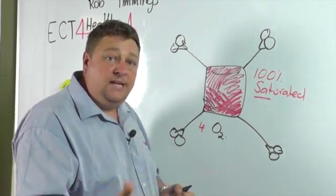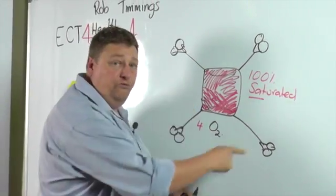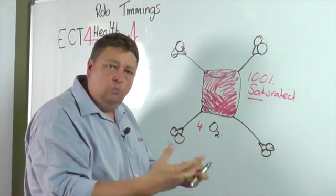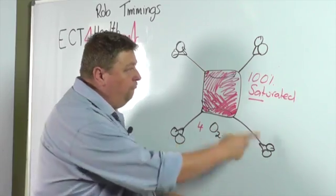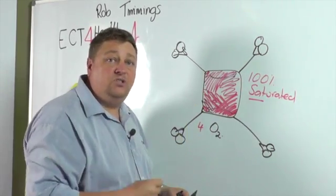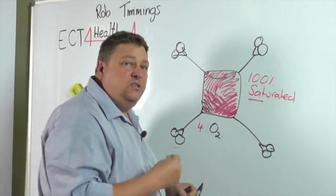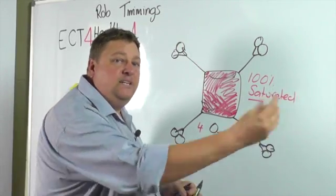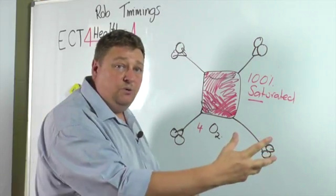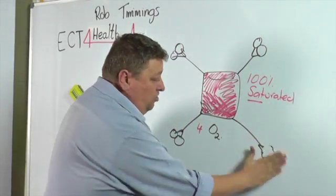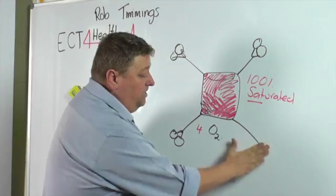In arterial blood, in a normal healthy individual, all four binding sites have an oxygen attached. But then that hemoglobin or that red blood cell carrying hemoglobin molecules travels out to the body. It delivers off oxygen to the cells that require it.